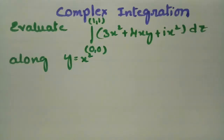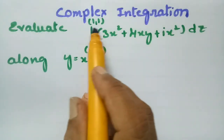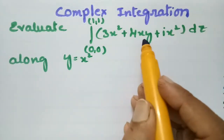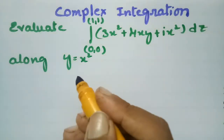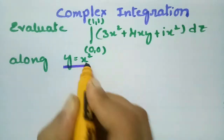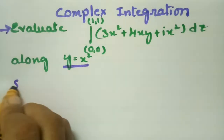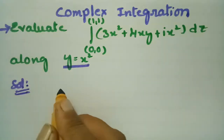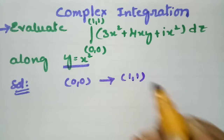Today's video I am going to solve a problem from complex integration — this is the most important and repeatedly asked question. We have to evaluate the integral from (0,0) to (1,1) of 3x² + 4xy + i·x² dz, along the curve y = x².